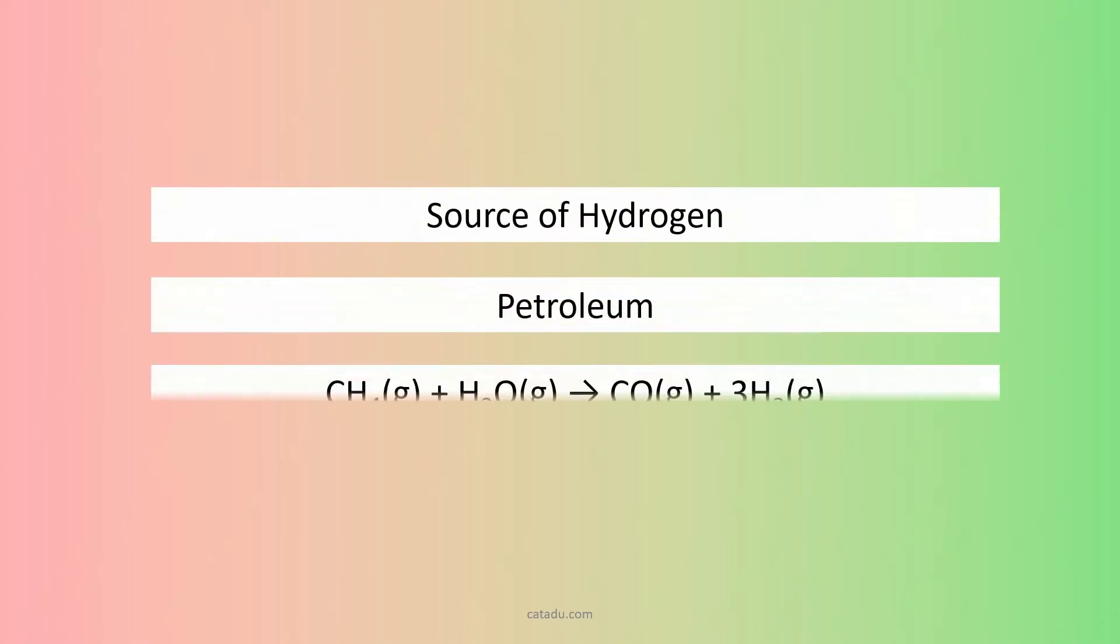Source of hydrogen is petroleum. We collect hydrogen gas by burning of methane using steam.